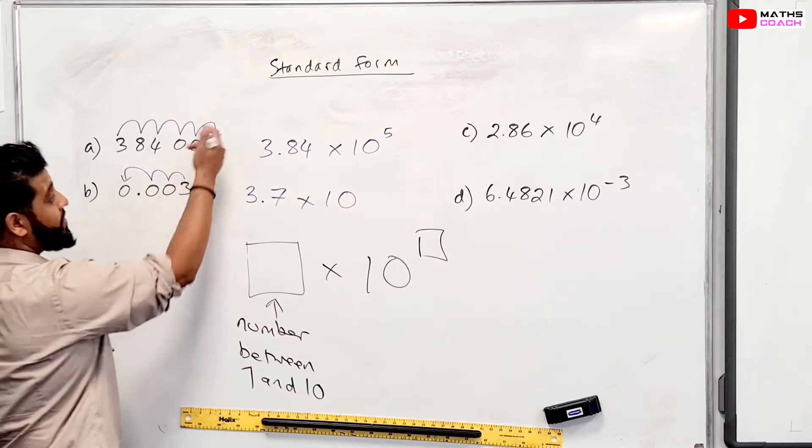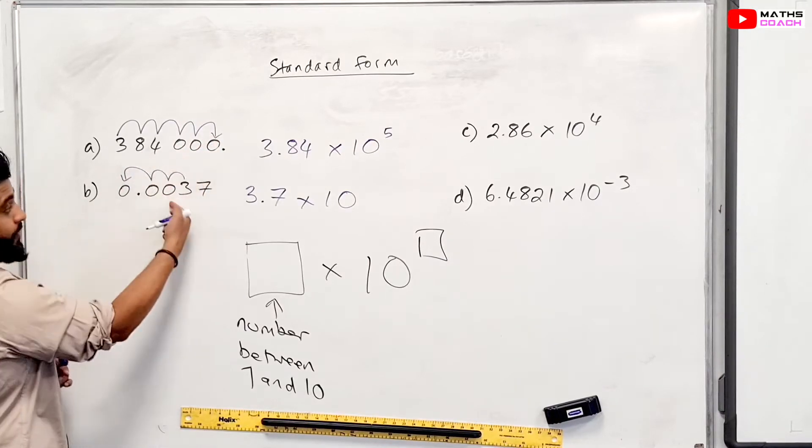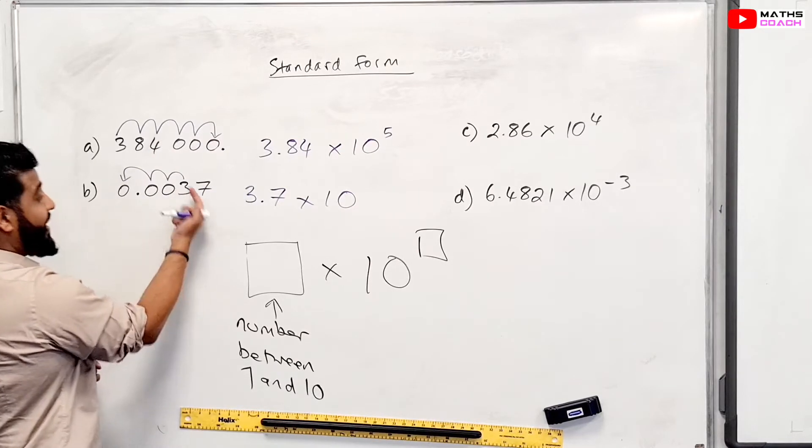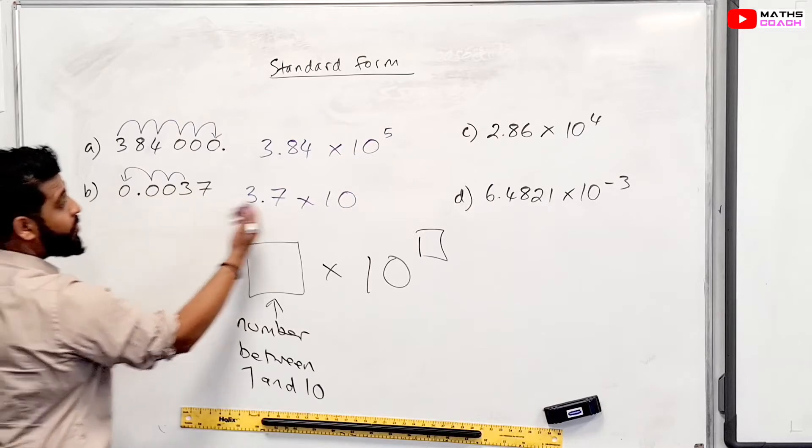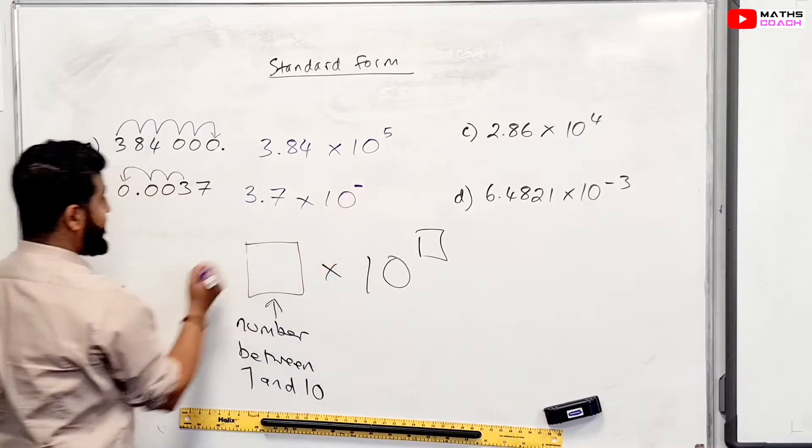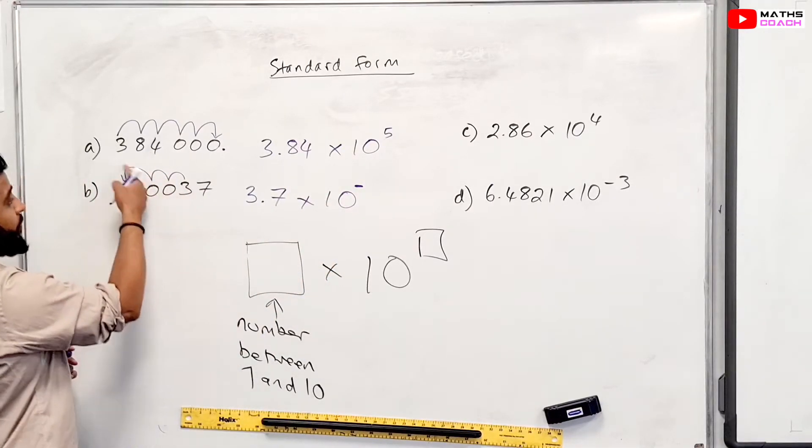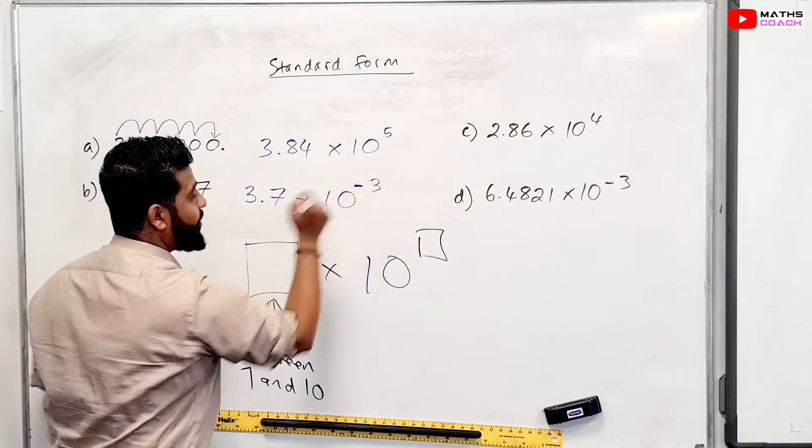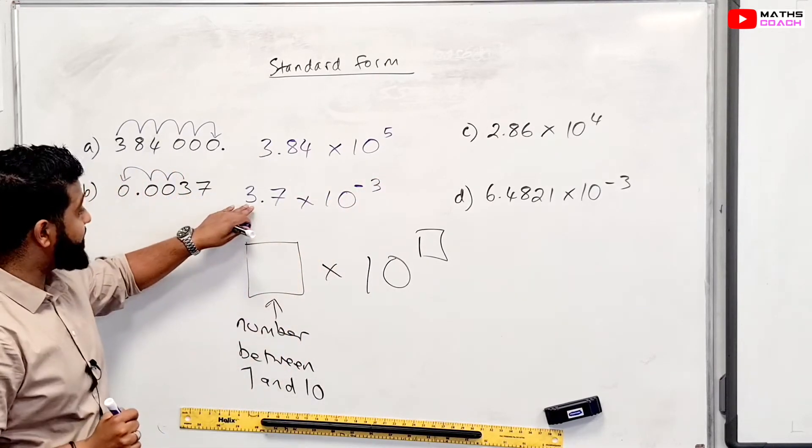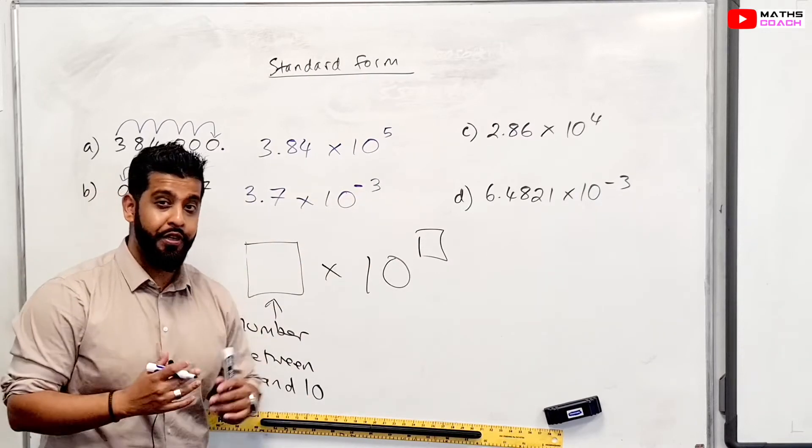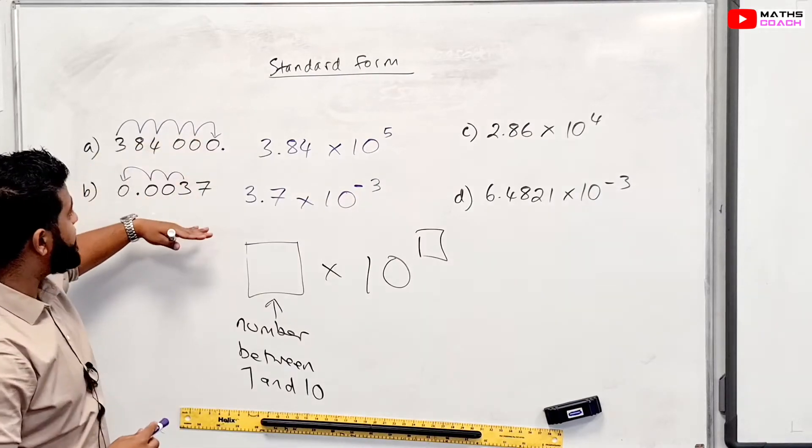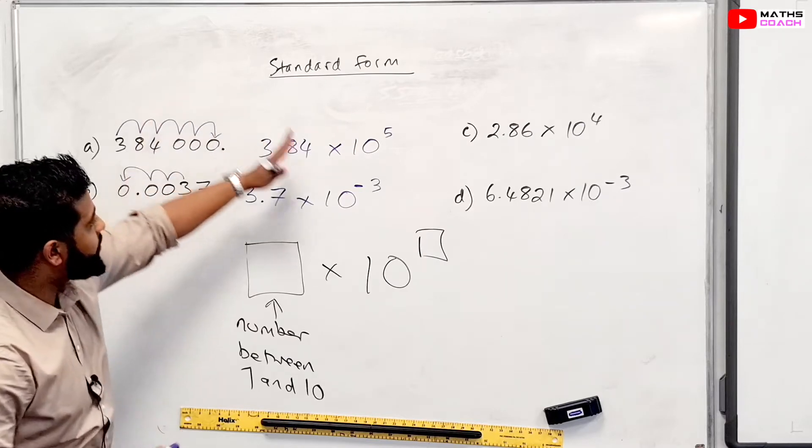Now, because this number is unlike this number, which is a huge number, this is a very small number, and it had to go into the integer area from being a decimal, we'll add a negative there to indicate that. So 1, 2, 3 steps, but with a negative. So the answer is, in standard form, 3.7 times 10 to the power of minus 3. So this is how you put numbers which are ordinary numbers into standard form.